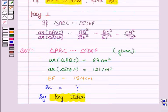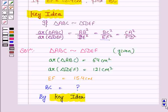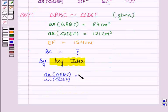and here we have to find the length of the side BC. So area of triangle ABC upon area of triangle DEF is equal to BC² upon EF².